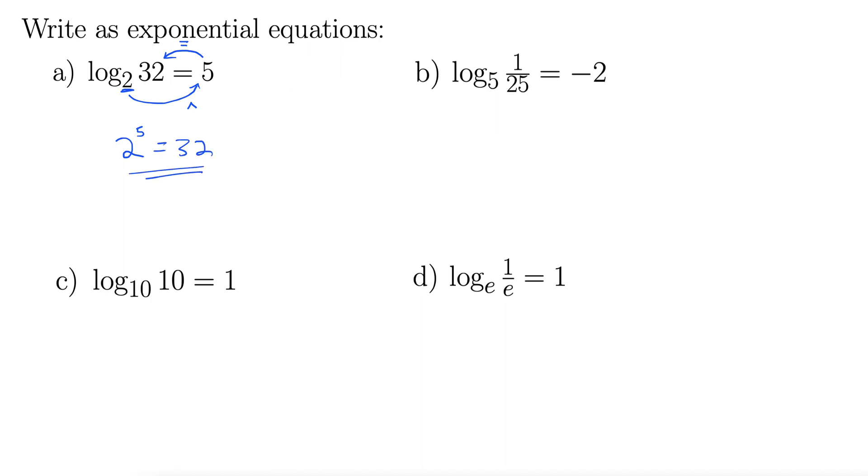There we go. 2 to the power of 5 equals 32. And you follow that same motion for each one of these. And this will be useful also when we go to solve logarithmic equations.